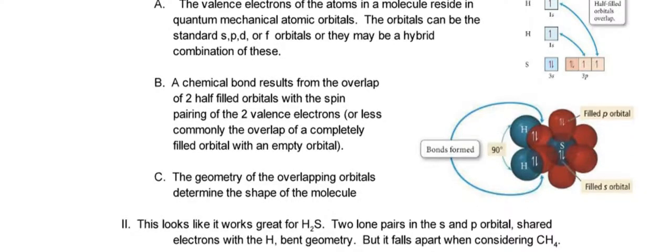So it looks like it works great for dihydrogen monosulfide. The two lone pairs in the S and P orbital are shared electrons with bent geometry. So let's take a look at this. So here's my S. Here is the orbital notation right here for S.